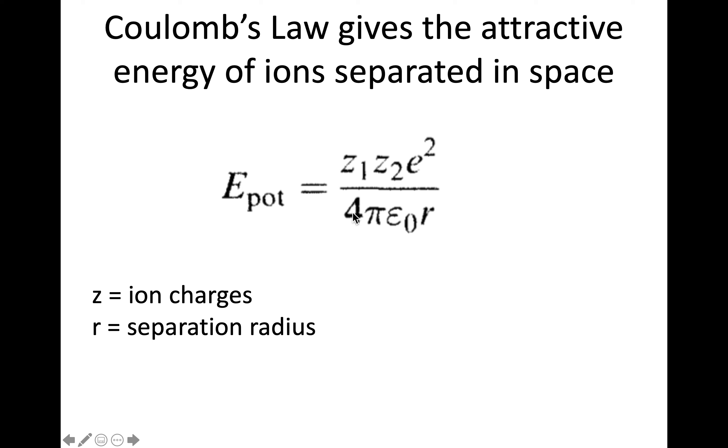And then the denominator is 4 pi epsilon naught, where this epsilon naught is the permittivity of free space, which is also a constant. And then the last part is R. So it's the distance, the separation distance between the ions. So if we think about all these, the 4 pi epsilon naught and the charge of electrons, all of those are constants.